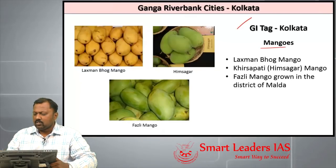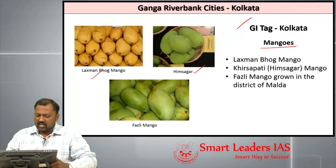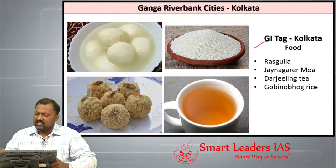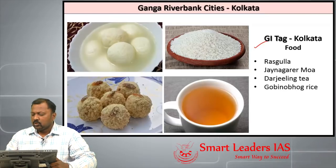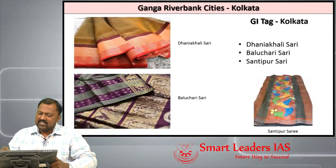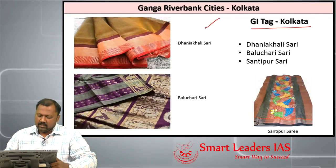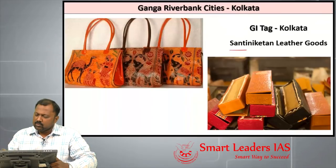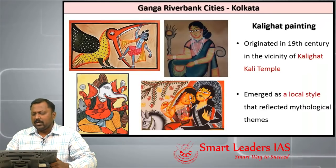Kolkata has many GI tags to its name. GI-tagged mangoes include Lakshmanbhog, Himsagar, and Fazli. Other GI tags include Rasgulla, Joynagar Moa, Darjeeling tea, and Gobindobhog rice. The saris that received GI tags from Kolkata include Dhakai Jamdani sari, Baluchari sari, and Shantipur sari. Shantiniketan leather goods have also received GI tags.